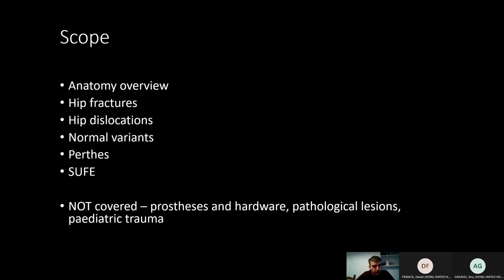I'll draw out a little bit of a scope of what we'll talk about this morning. We'll go over some very basic anatomy and then get straight into the meat of it with hip fractures, a bit on dislocations, a couple of normal variants, and then some paediatric stuff at the end. I haven't gone into detail about pathological lesions, prostheses, total and hemiarthroplasties, or paediatric trauma.